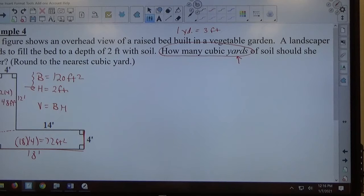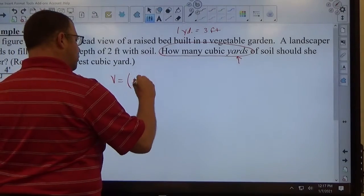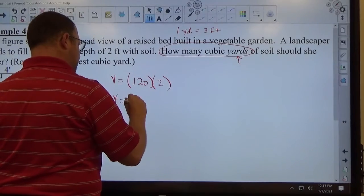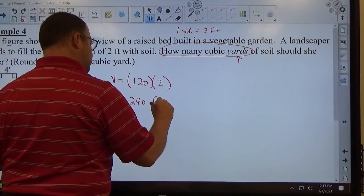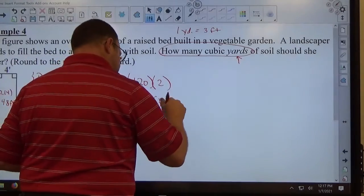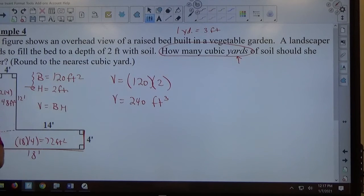Feel free to use a calculator to calculate if necessary. So once we've done both these calculations, we know the area of the base. We know the height. So the volume equals B times H. So volume, in this case, is going to be 120 square feet times 2 feet, which makes a total of 240 cubic feet. Square feet times feet makes feet to the third.